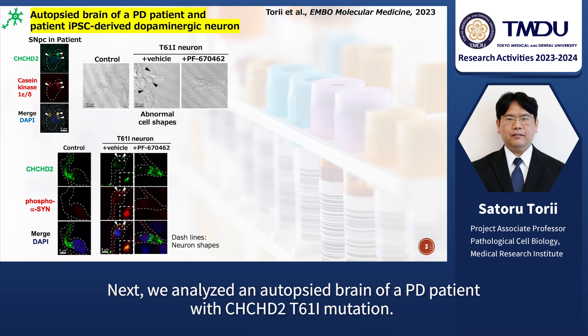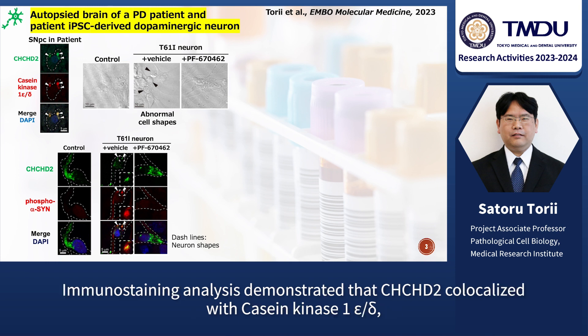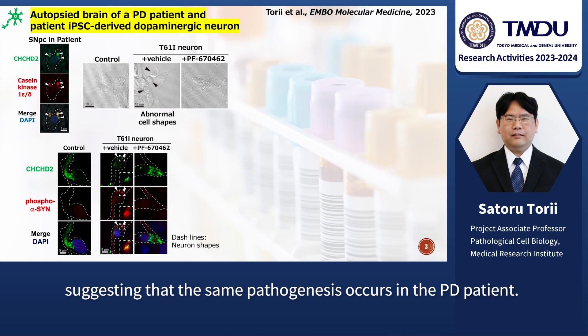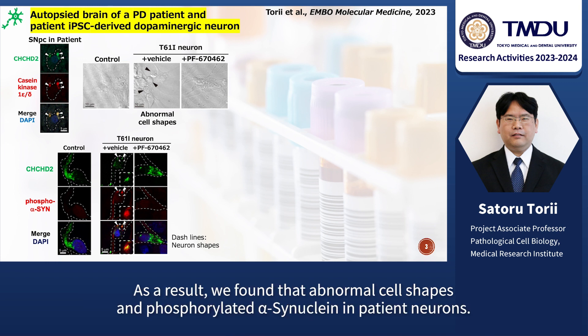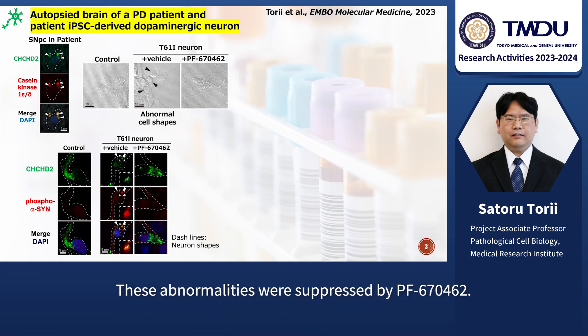Next, we analyzed an autopsied brain of a PD patient with the CHCHD2-T61I mutation. Immunostaining analysis demonstrated that CHCHD2 co-localized with casein kinase-1-epsilon delta, suggesting that the same pathogenesis occurs in PD patients. We also used patient iPS cell-derived dopaminergic neurons, and found abnormal cell shapes and phosphorylated alpha-synuclein in patient neurons. These abnormalities were suppressed by PF670462.